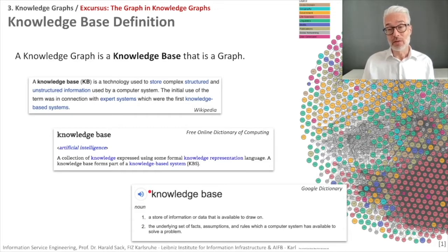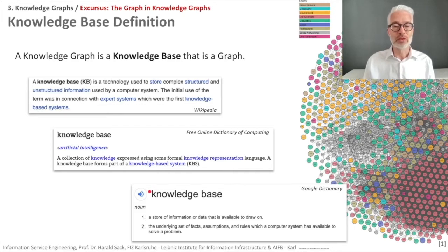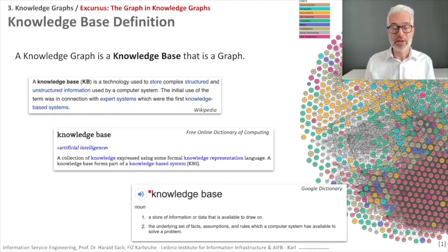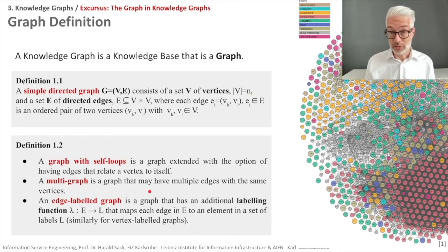The Google dictionary defines a knowledge base more broadly for ordinary people — as a store of information or data available to draw on, or the underlying set of facts, assumptions, and rules which a computer system has available to solve a problem. But here we are not interested in the knowledge base; we are interested in the graph. So what is a graph?